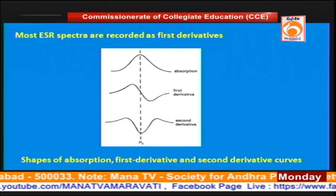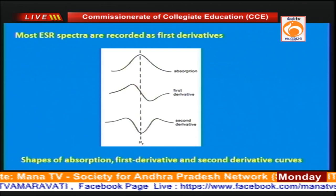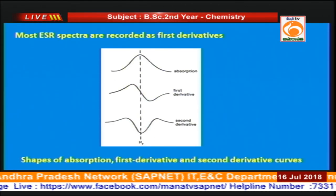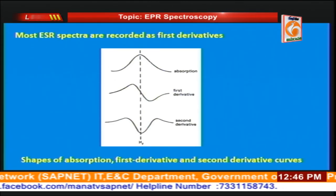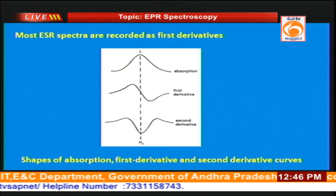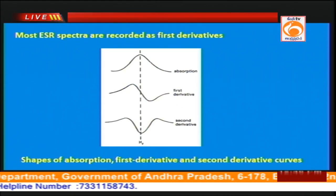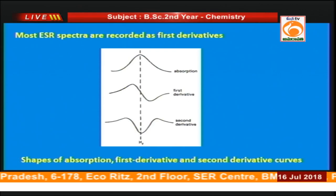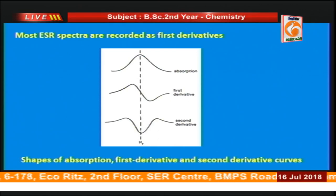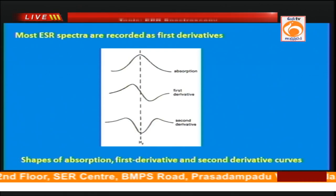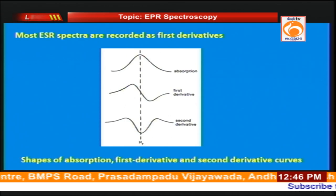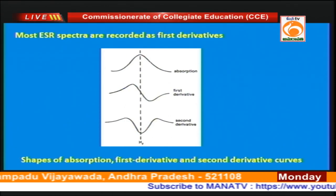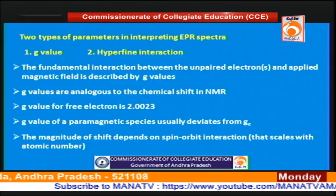NMR spectra are commonly recorded as absorption spectra, whereas EPR spectra are recorded as first derivative or second derivative spectra. Because the energy difference between the two states is very small and the population difference is also very small, to improve the signal-to-noise ratio we generally record the spectra as first or second derivative curves.